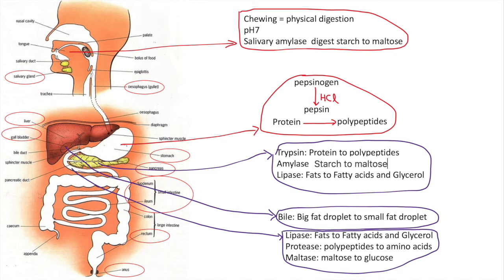For bile, they don't really chemically digest the fat, it's emulsification. They break down larger fat droplets into smaller ones to increase the surface area to speed up the process of digestion of fats, so there's more area for the lipase to work on.